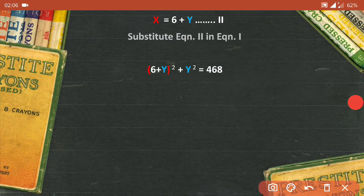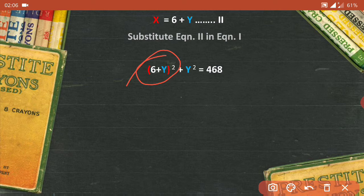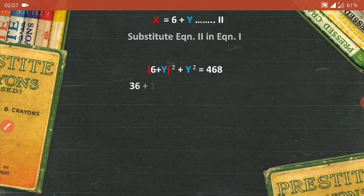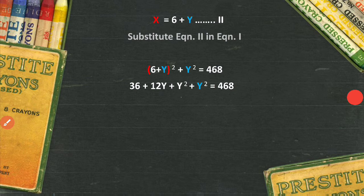When I say 6 plus y the whole square, is nothing but a plus b the whole square. The expansion is a² plus 2ab plus b². So this would become 6² is 36, plus 2ab, so 2 multiplied by 6 will become 12, 12 into y will become 12y, plus b square that is y².